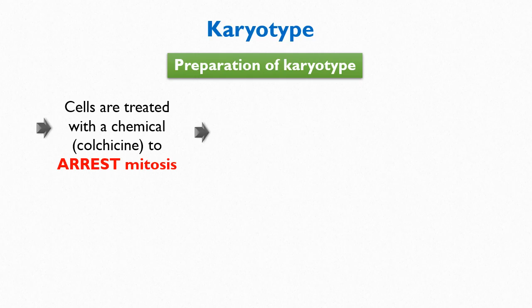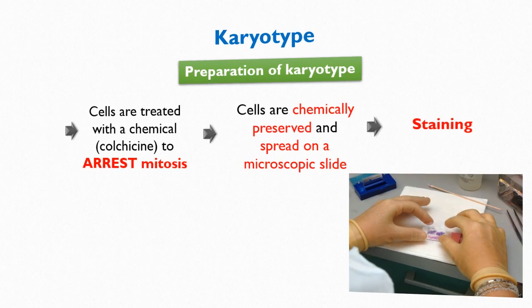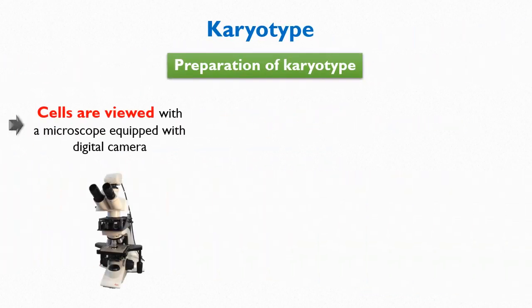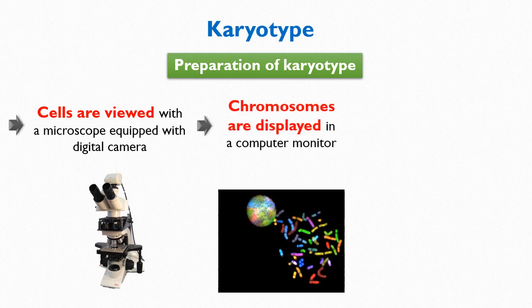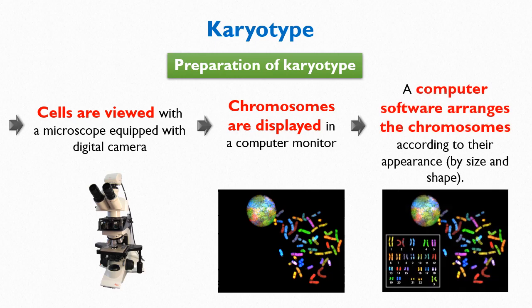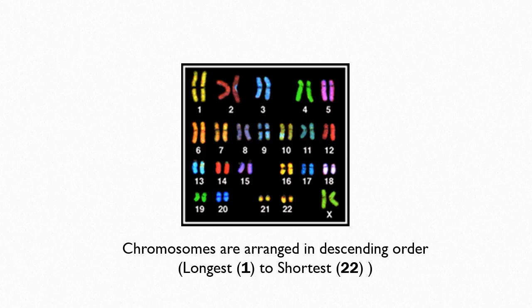These cells are then chemically preserved and spread on a microscope slide. They are stained and viewed with a microscope equipped with a digital camera. The image of chromosomes is displayed on a computer monitor, and a computer software arranges the images of chromosome pairs according to their appearance — that is, by size and shape — in descending order, starting with the longest chromosome. This resulting ordered display of chromosomes is called a karyotype.